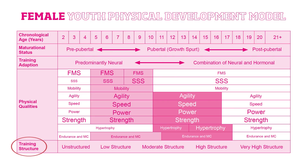Training structure shows the levels of structure needed as a child develops. For example, at the younger stages training will mostly be formed around play. It becomes increasingly structured as the child continues to develop and mature, so it focuses on the specific physical skills they need to develop. In the physical qualities section of the model you'll notice there are different sizes of text — that's important. The bigger the text, the more important the physical quality is and the more likely it will respond to training.